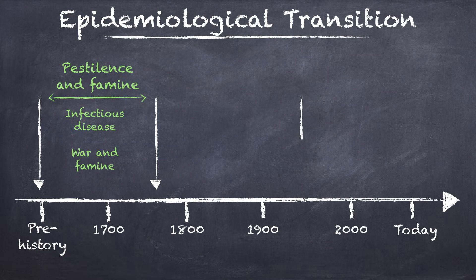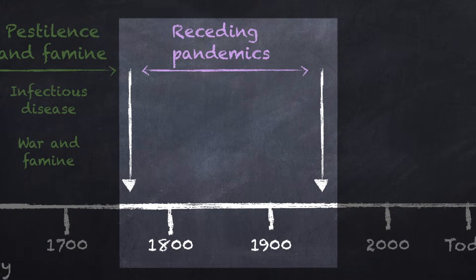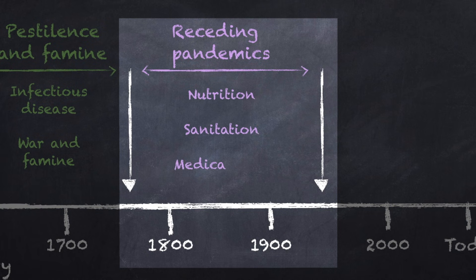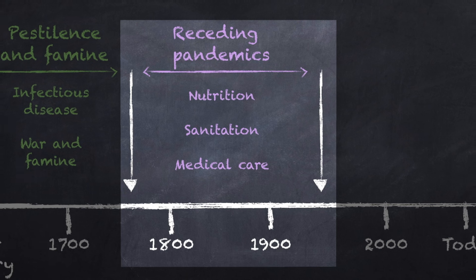Phase two: the age of receding pandemics. Between the middle of the 18th and the middle of the 20th century, the Industrial Revolution brought improved nutrition, sanitation, and medical care. This resulted in a massive reduction in the spread of infectious disease and epidemics, though this didn't apply to all people — many living in squalid city conditions still died of diseases like cholera.